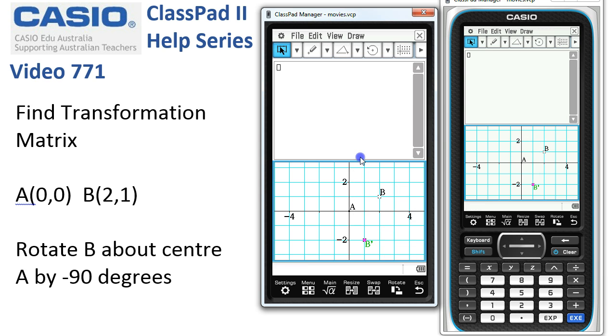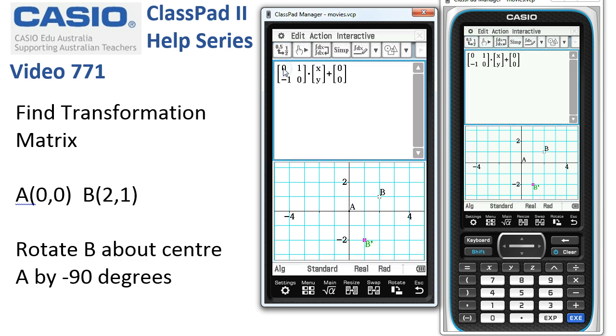When I drag these pair up to the main window and release, you can see here is the transformation matrix for that procedure. And if I tap execute, you can see we actually get the mapping that X is mapped onto Y and Y is mapped onto negative X.